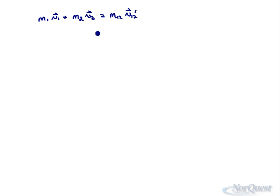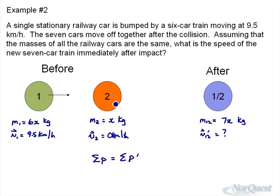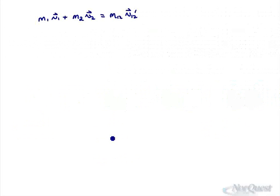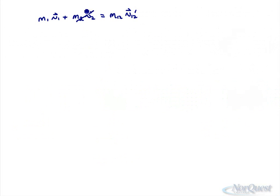Now when you go back to this question, object two had a velocity of zero. So its momentum will be zero. So we can cross this out, and what we're looking for is the combined velocity after.